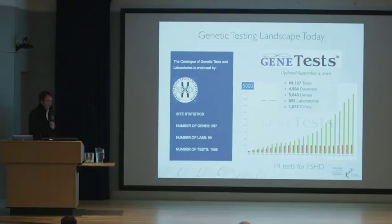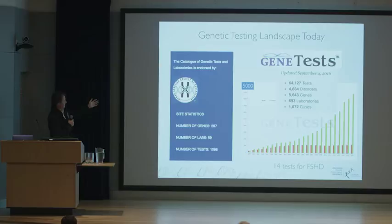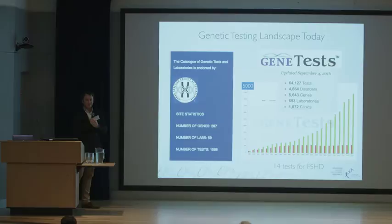FSHD is not unusual in the sense that this slide endorsed by the Human Genetic Society of Australia endorses over a thousand genetic tests. One from the US lists 64,000 genetic tests. The idea that lots of different genetic disorders have a whole range of different genetic tests to try and diagnose them is not new.